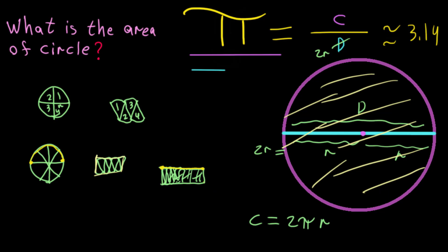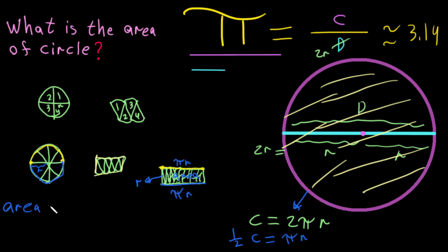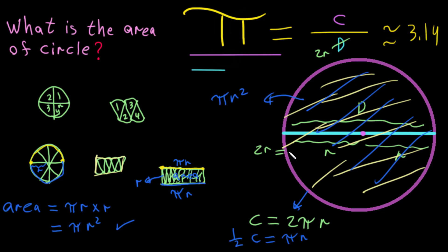This top line is half of the circumference, and since C equals 2πR, half of C equals πR. So this side is πR and this side is also πR. The height of the rectangle is just the radius R. Therefore, the area of this rectangle equals πR multiplied by R, which is πR².